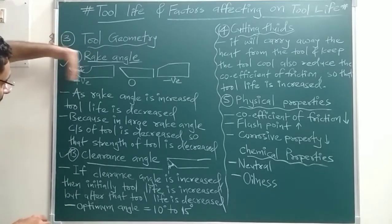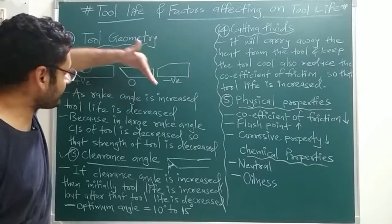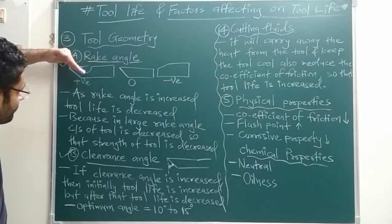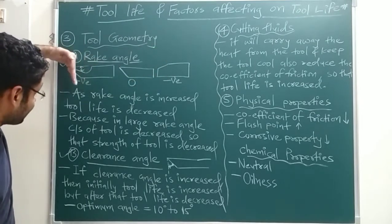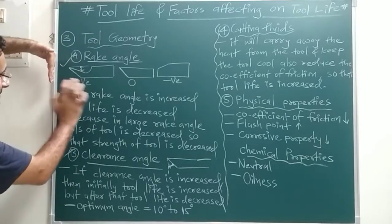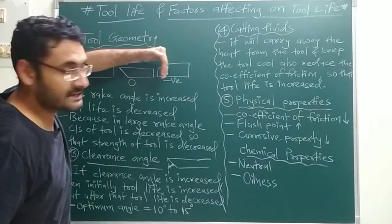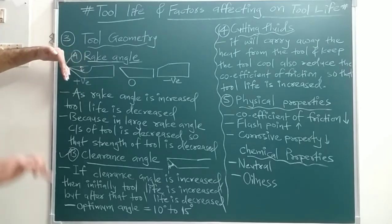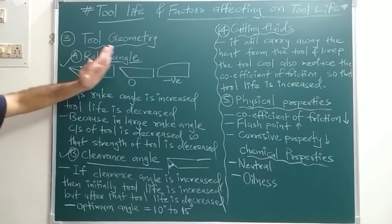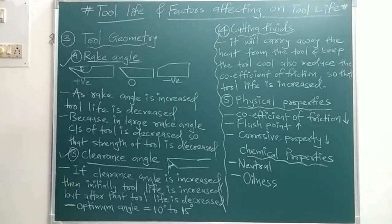To summarize: if you increase the rake angle, cross-sectional area decreases, strength decreases, and tool life decreases. If you decrease the rake angle — going from positive to negative rake angle — the cross-sectional area increases, strength increases, and tool life increases. So rake angle is inversely proportional to tool life.